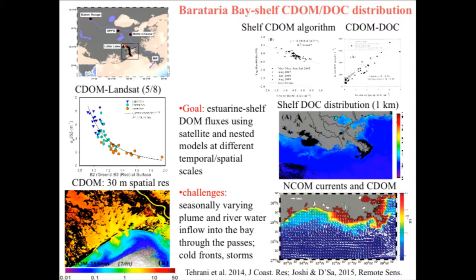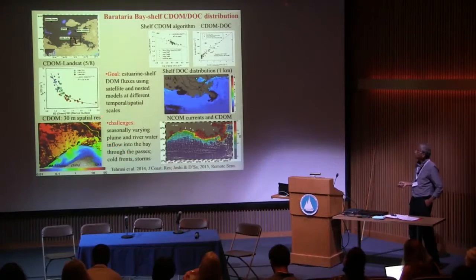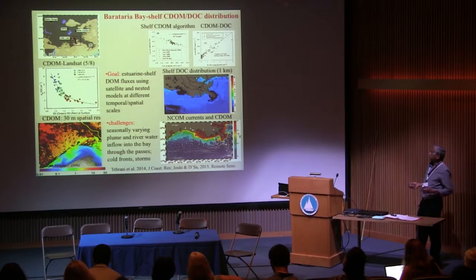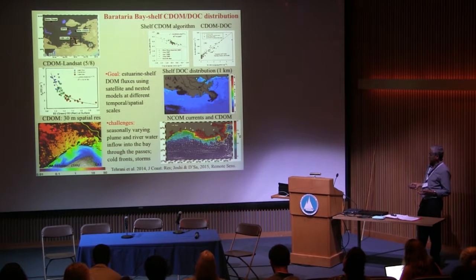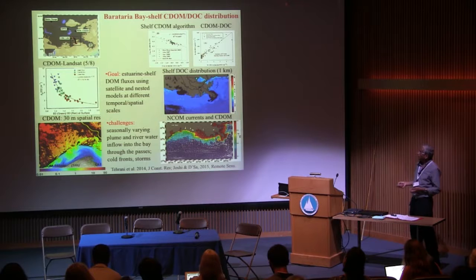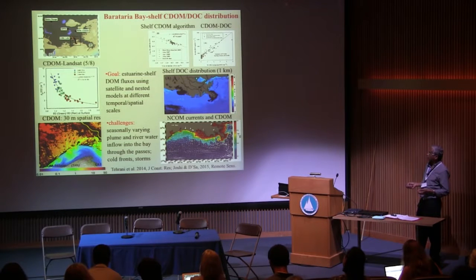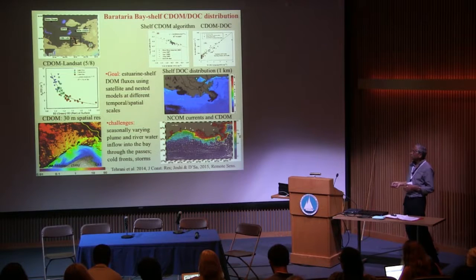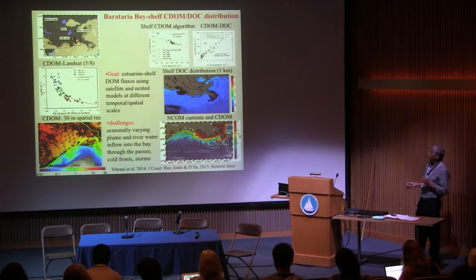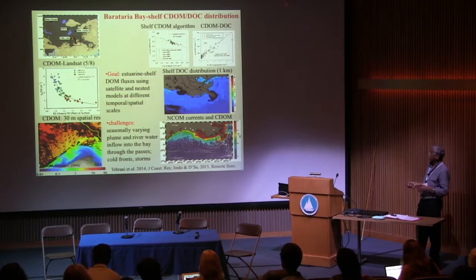We developed a pretty robust algorithm for CDOM using a green-to-red band ratio algorithm. This is an example of a 30-meter spatial resolution spatial distribution. You can see the black lines are the wind vectors, and during some strong wind events, you do get strong fluxes of CDOM or DOC coming out from the bay.